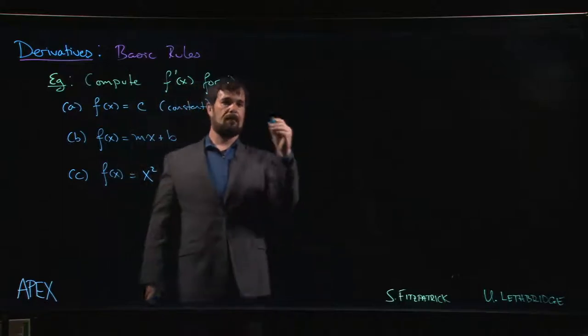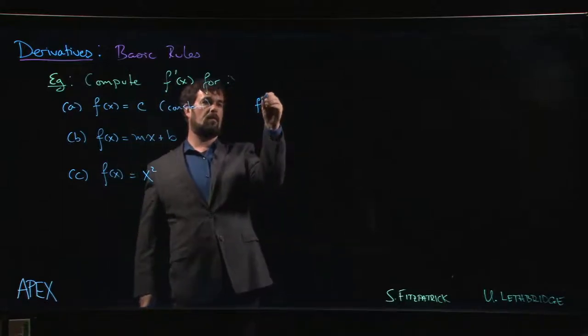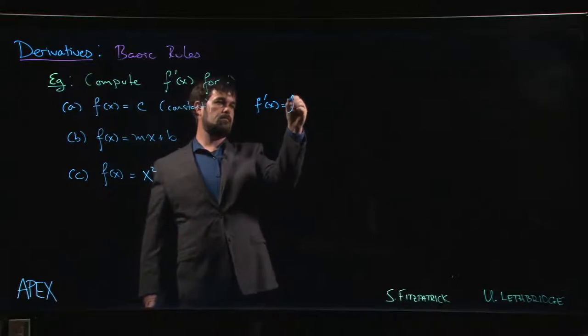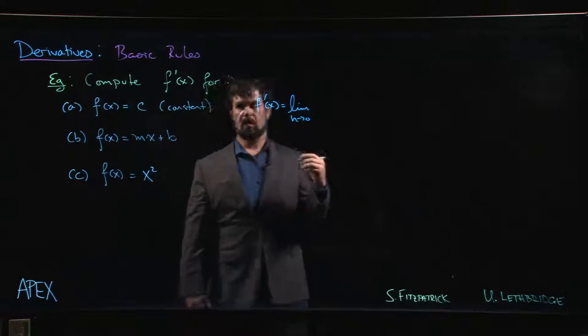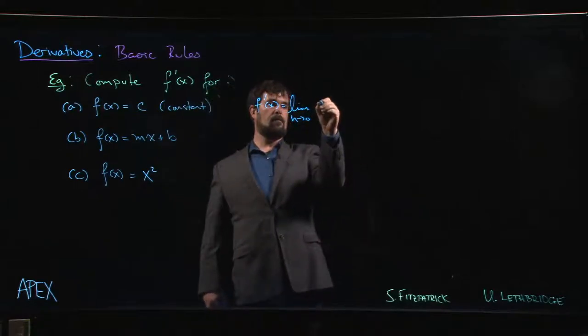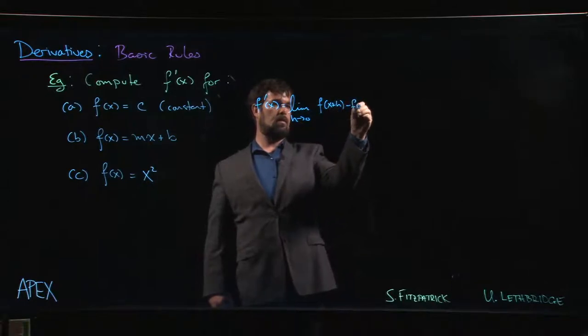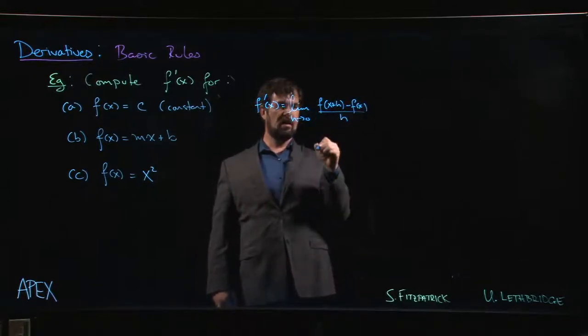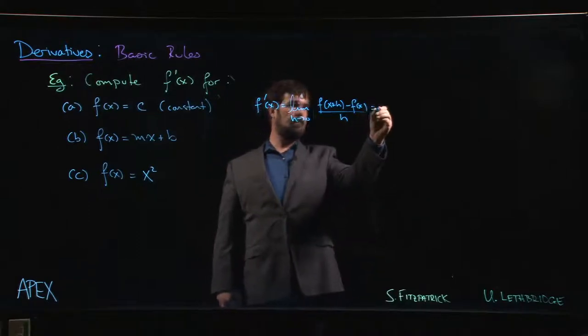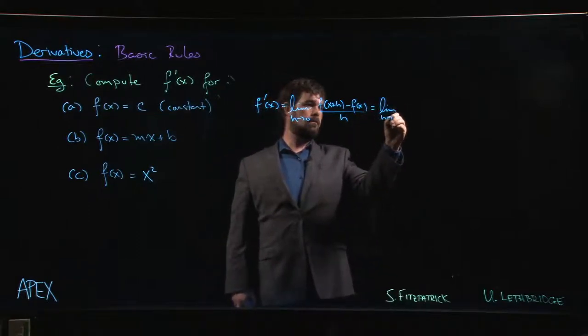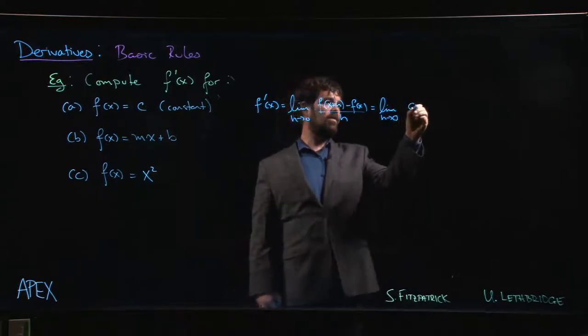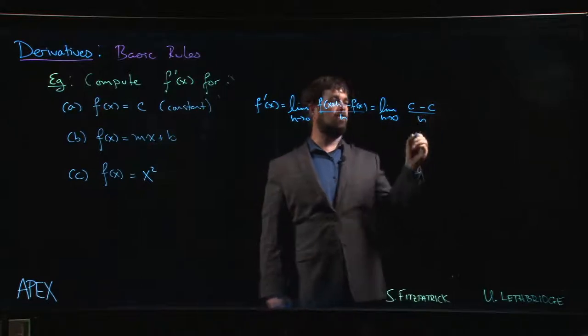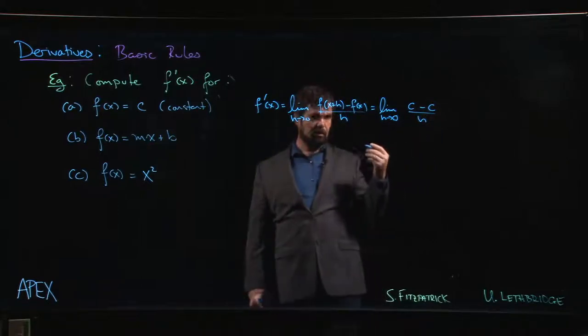f'(x) equals the limit as h goes to 0 of [f(x+h) - f(x)]/h. But that's the limit of (c - c)/h, and c minus c equals 0 regardless of the value of h, so that limit is always 0.